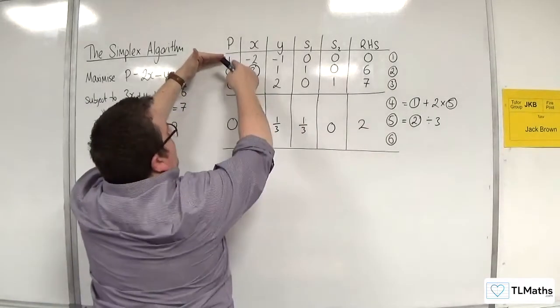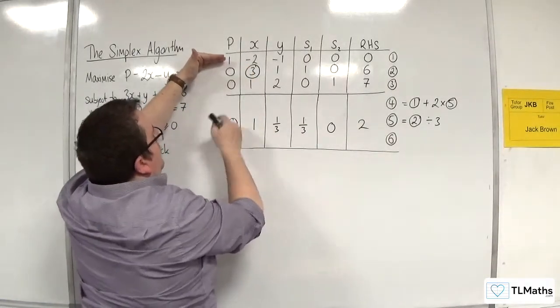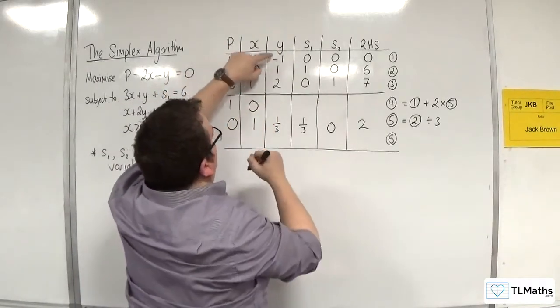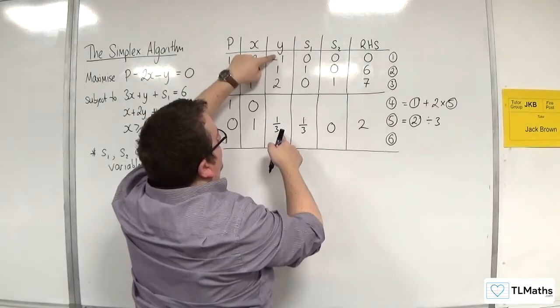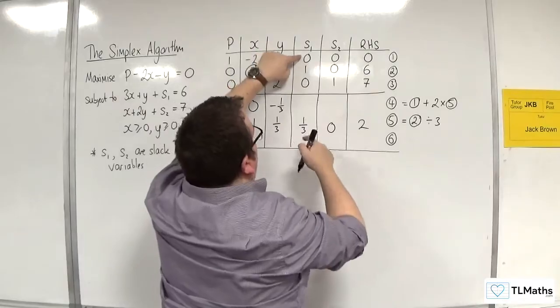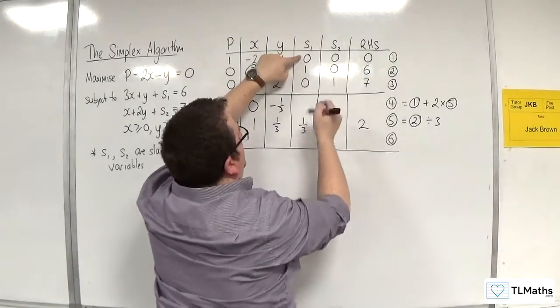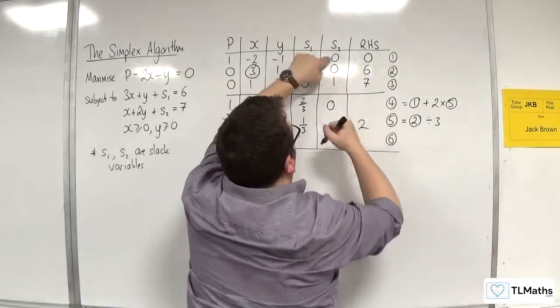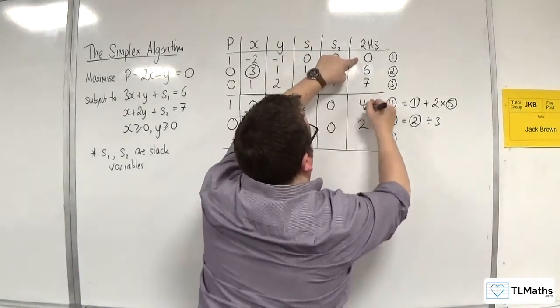So I'm going to get 1 plus 2 lots of 0, 1. Minus 2 plus 2 lots of 1 is 0. Minus 1 plus 2 lots of 1 third is minus 1 third. 0 plus 2 lots of 1 third is 2 thirds. 0 plus 2 lots of 0 is 0. 0 plus 2 lots of 2 is 4.